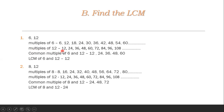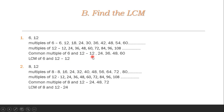Next, multiples of 12: 12, 24, 36, 48, 60, 72, 84, 96, 108, etc. Now the common multiples of 6 and 12 are: 12, 24, 36, 48, 60, etc. The LCM of 6 and 12 — the lowest number is 12.